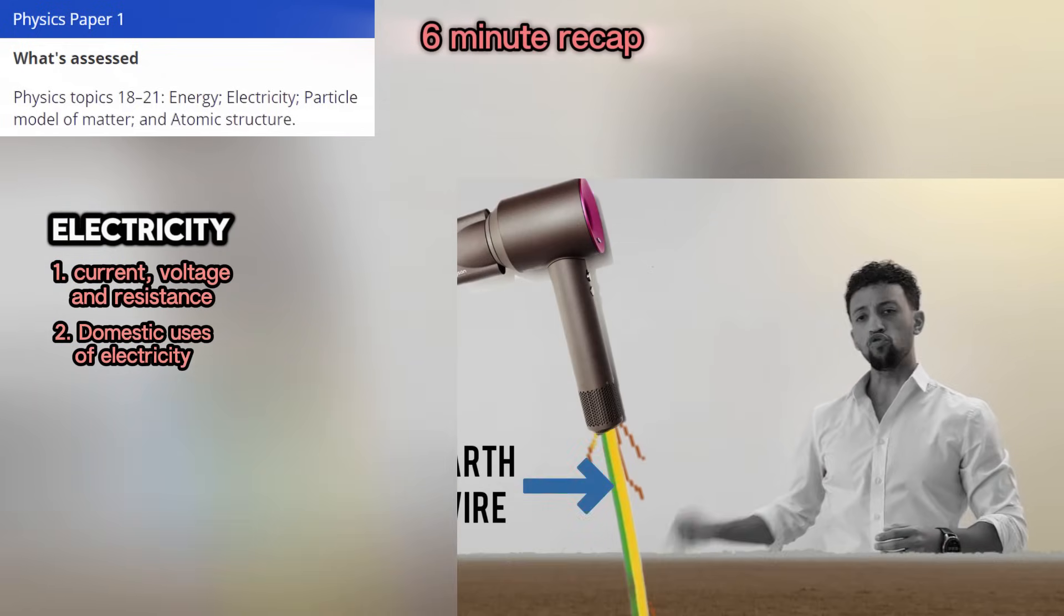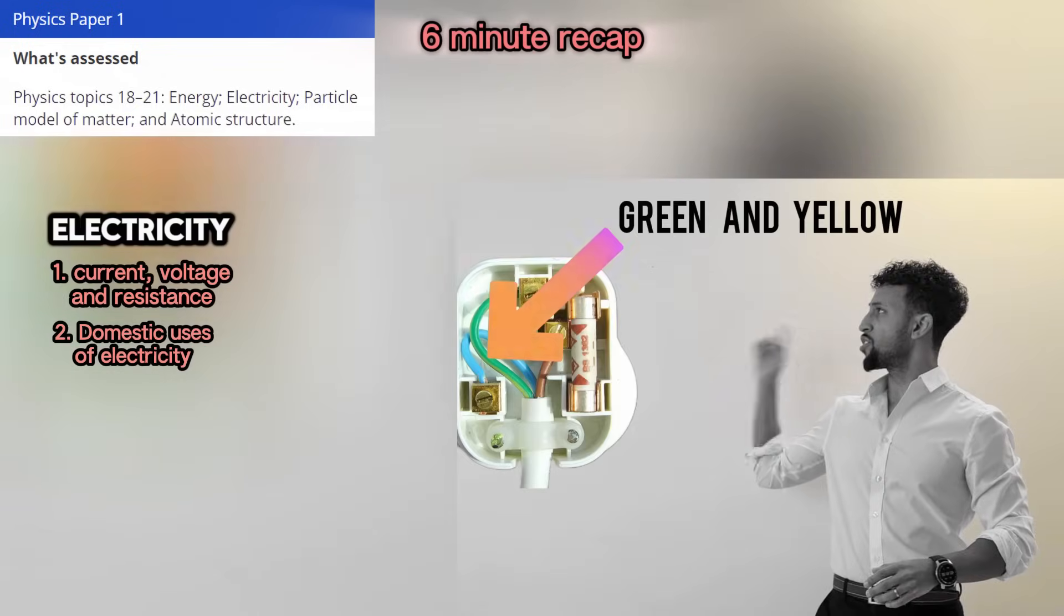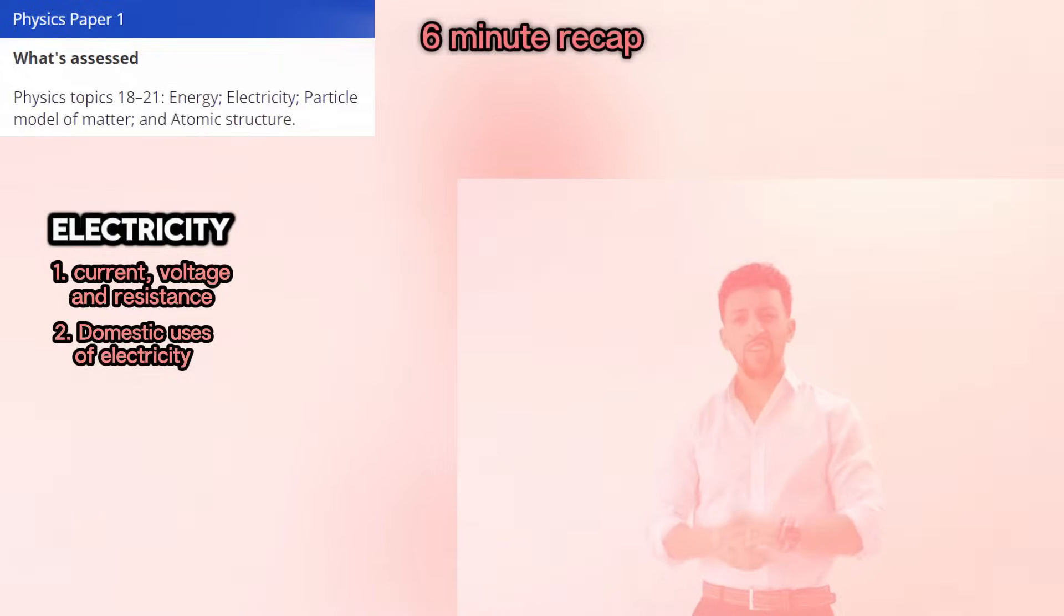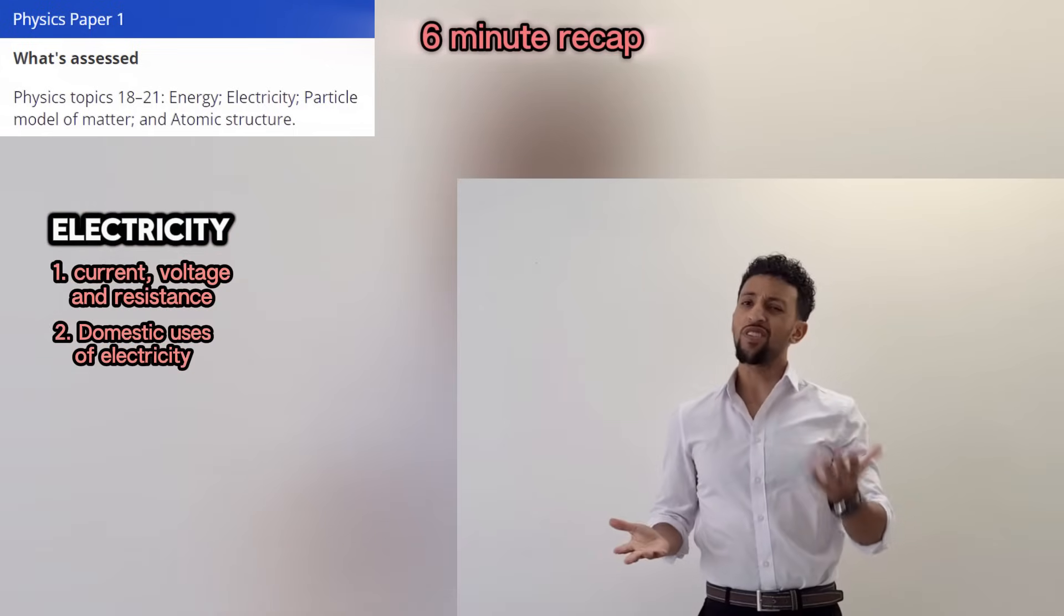Prevents you getting shocked and meeting someone higher. If there is a break inside, the earth one will acquire the current to the ground. From there it will expire. Green and yellow is their colour. Last part is the fuse, without it there'll be fire.